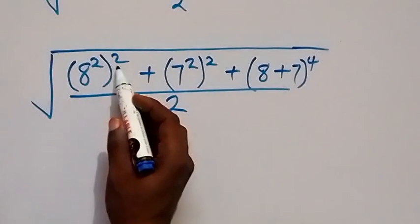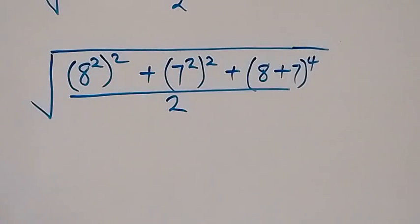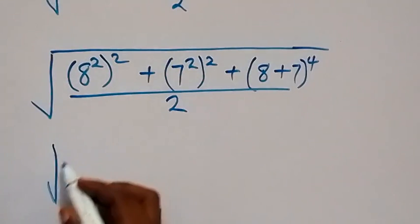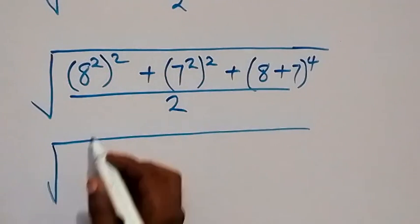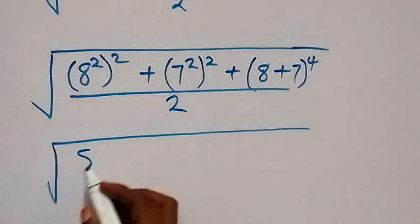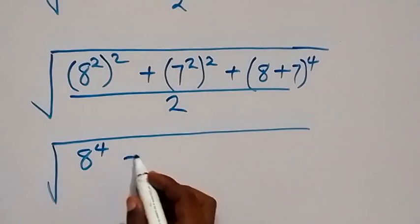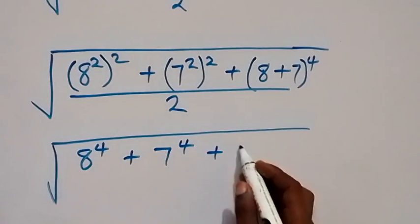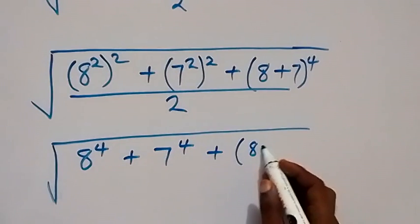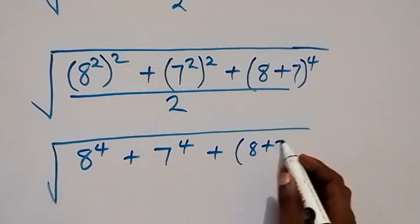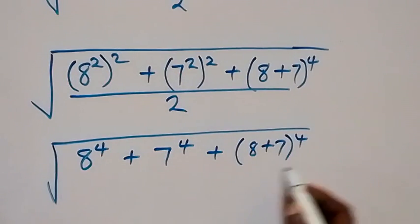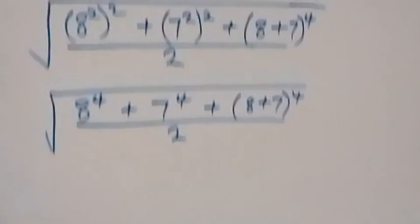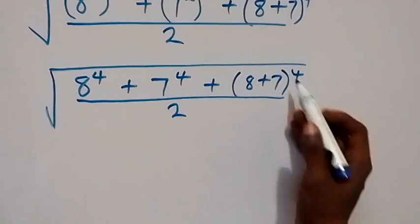From here we can simplify this using the law of indices — the powers multiply — and we have square root of 8 raised to power 4, plus 7 raised to power 4, plus (8 plus 7) raised to power 4, divided by 2.